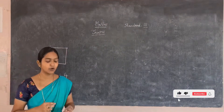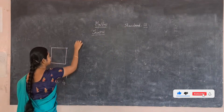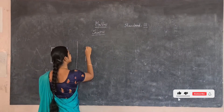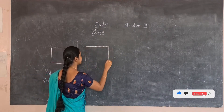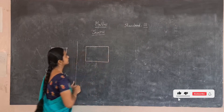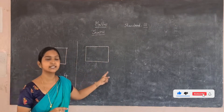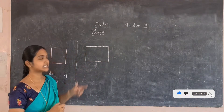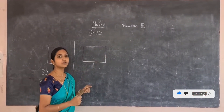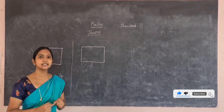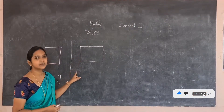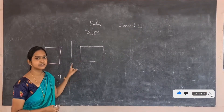Let's move on to the next shape. What is this shape called as? This is a rectangle. See here, the opposite sides are equal, so we call this a rectangle. Now let us find the sides and vertices for this rectangle.